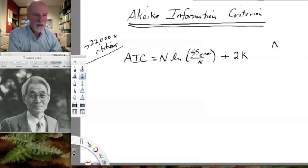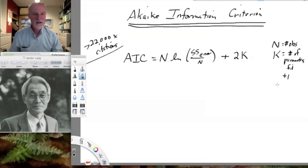Where N is the number of observations, K is the number of parameters that we have fit, plus 1. Okay. And then, as I said, S is the sum of square error for the model.